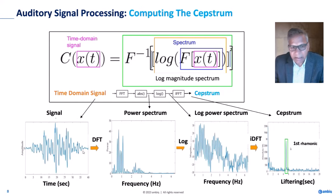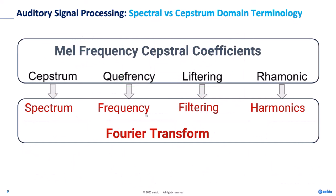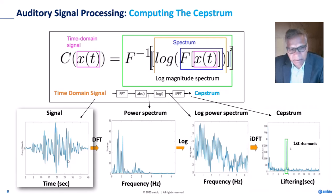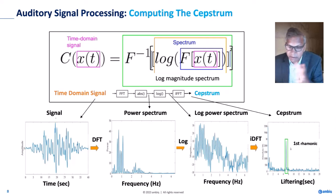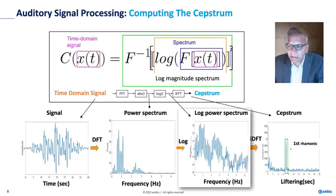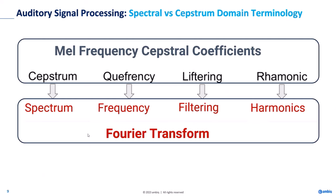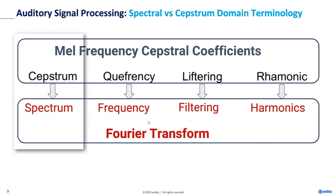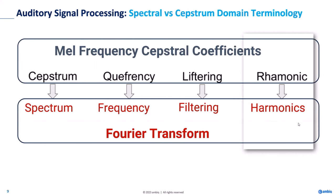In the Fourier domain, we call the output a spectrum. In the cepstral domain, we are kind of coming back to a time-like domain. When we apply a MEL filter and take the log, it provides us a cepstral domain — not really a time domain, but a cepstral domain. In MEL Frequency Cepstral Coefficients (MFCC), the terminology shifts: spectrum becomes cepstrum, frequency becomes quefrency, filtering becomes liftering, and harmonics becomes rahmonics.